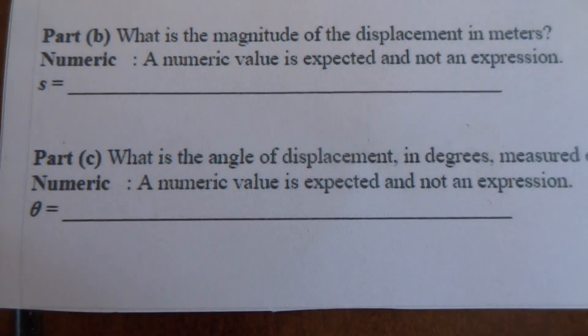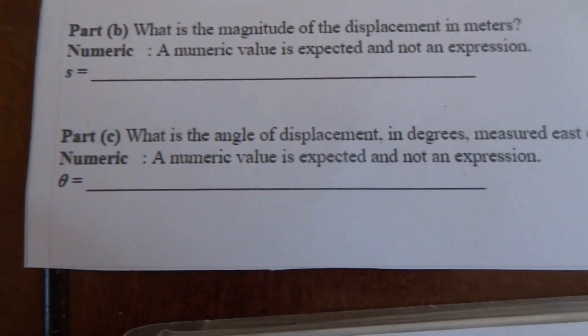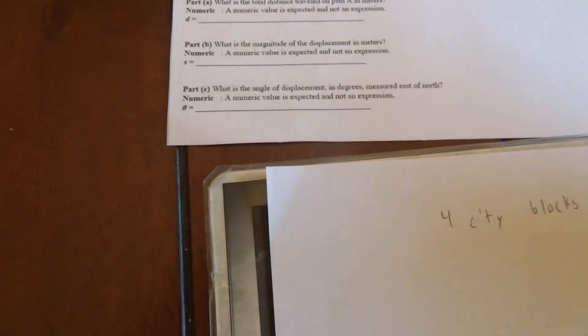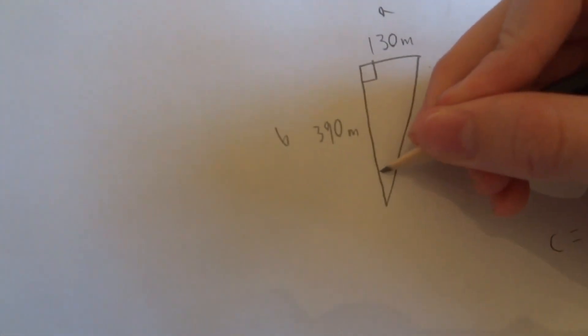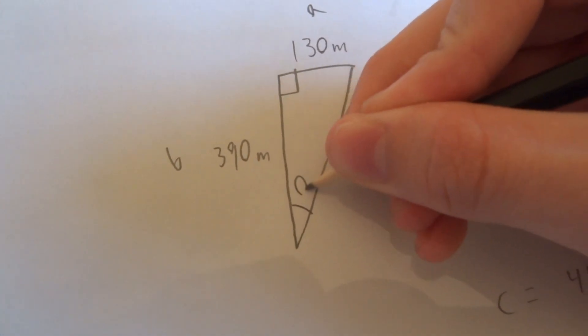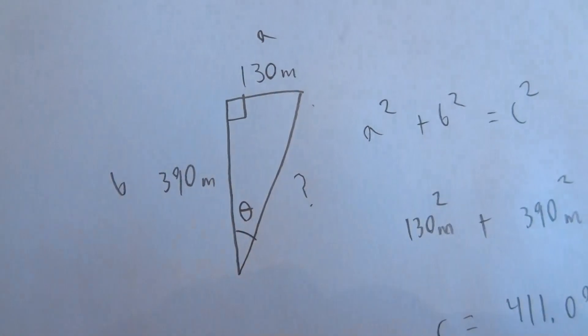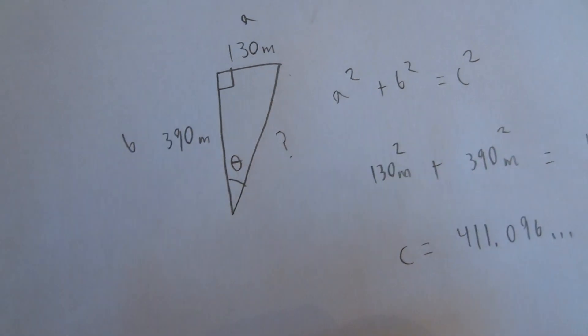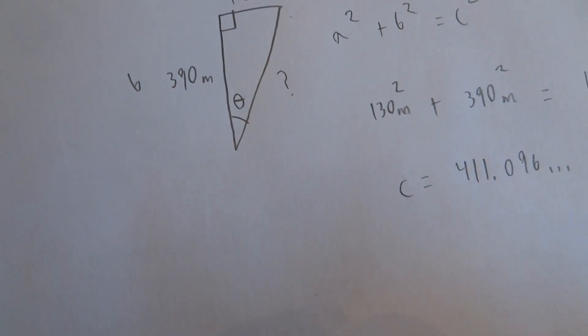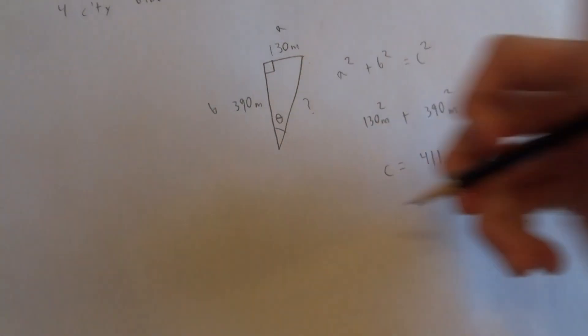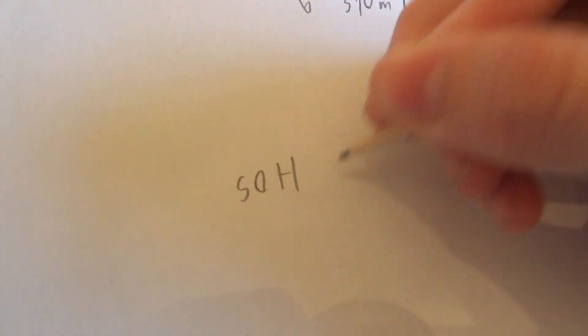And now for part C it asks what is the angle of displacement in degrees measured east of north. And so that's essentially asking for this angle right here, we call it theta.